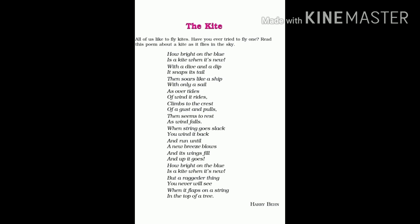'How bright on the blue is a kite when it's new.' Here the poet says that the kite, during its first flight, looks so beautiful, pretty, and vibrant in the blue — 'blue' referring to the clear blue sky. He says that the kite flying in the sky looks so beautiful, vibrant, and pretty when it's new.